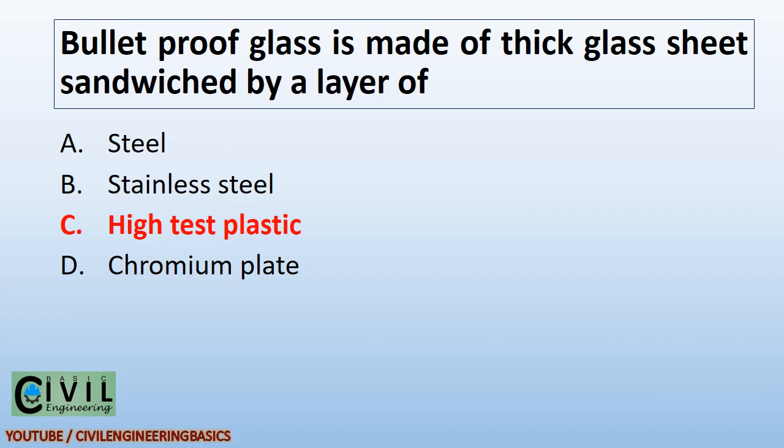Bulletproof glass is made of thick glass sheet sandwiched by a layer of high-test plastic.